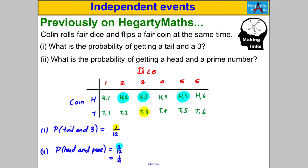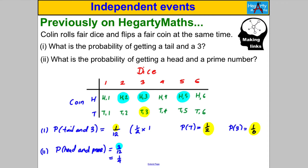Independent events: two events are independent if one doesn't affect the other. Going back to the previous example about rolling a dice and flipping a coin, there is actually another way to answer those questions rather than using a sample space. The probability of a tail and a three was one out of twelve. Note that the probability of getting a tail is one half, and the probability of getting a three on a dice is one out of six. A twelfth equals one half multiplied by one sixth.